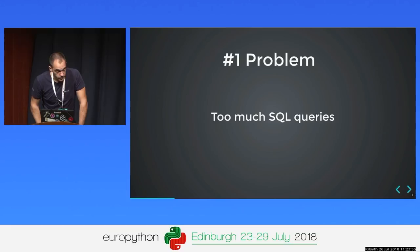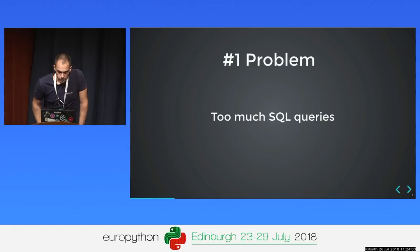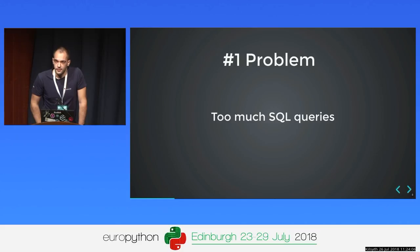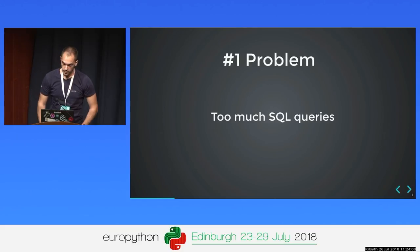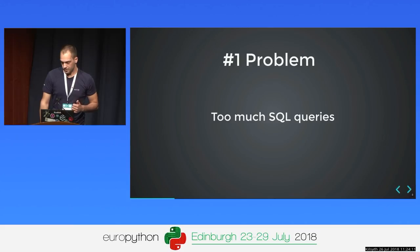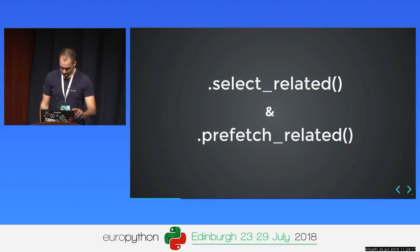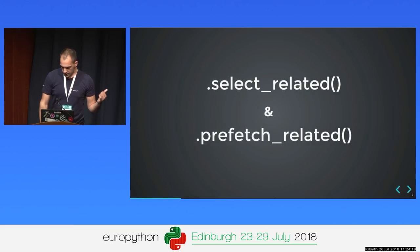The first problem: too many SQL queries. On the project I work on at the moment, we had an API which had like five or six thousand SQL queries per request, which was a real performance issue. We know these two methods — select_related and prefetch_related — which come natively from the Django ORM.